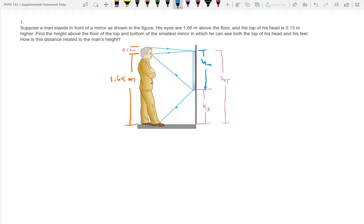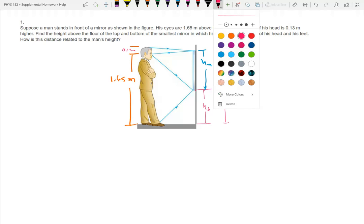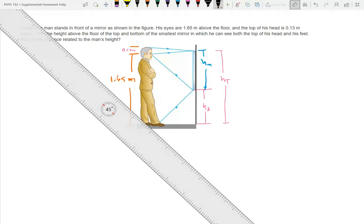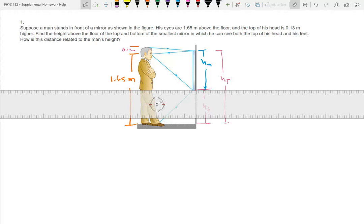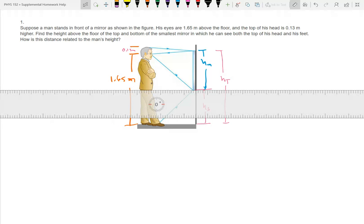Are you doing something with similar triangles? That is the basis for all this, yes. So we know we have to add the 1.65 meters and the other space above his head to get the full height of the person.